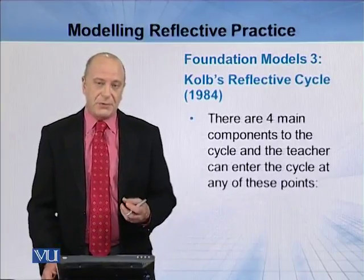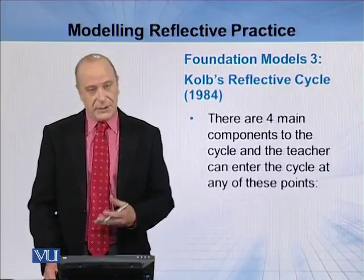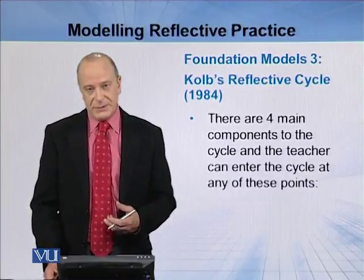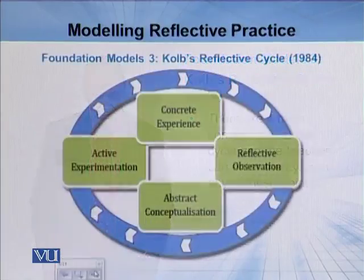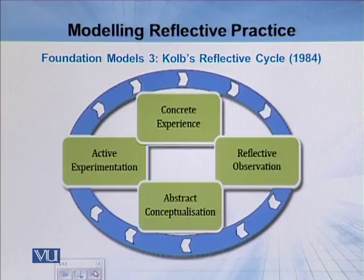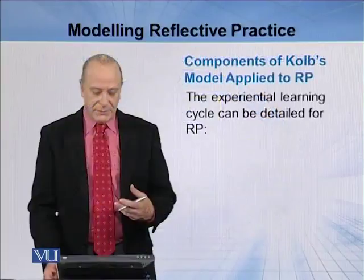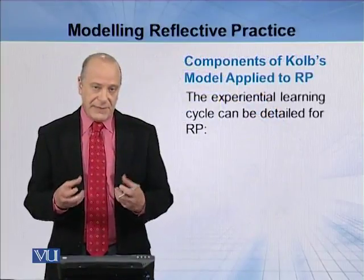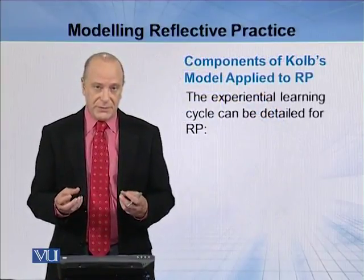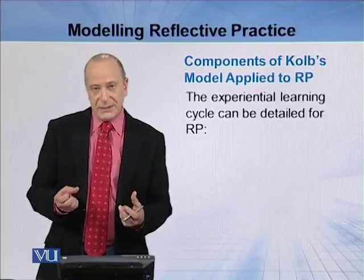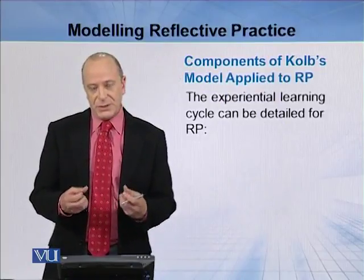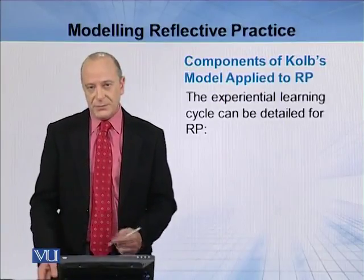In terms of this model, there are four main components, and there's a diagram to illustrate this. The four components are concrete experience, reflective observation, abstract conceptualisation and active experimentation. The experiential learning cycle is made up of these four components, and we can look at them in a little bit more detail to try and understand what each of these four components are.